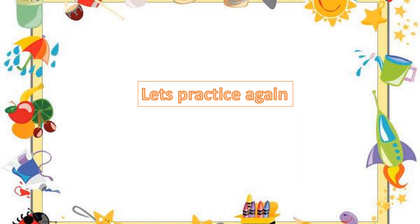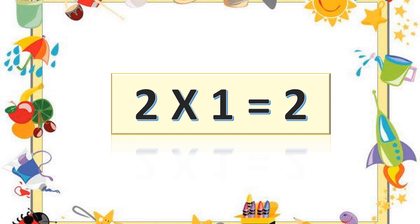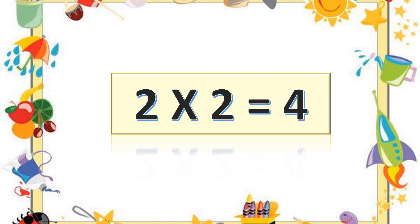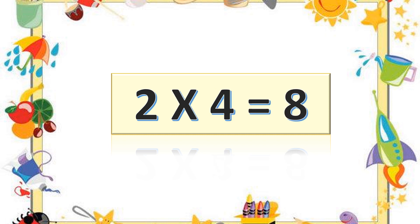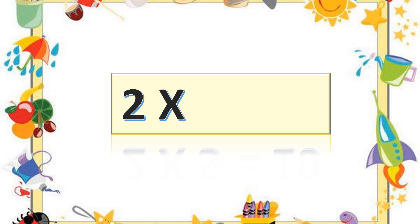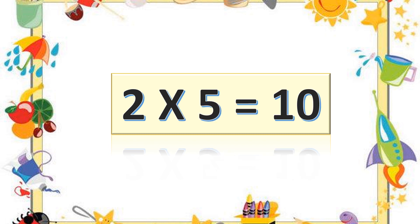Let's practice again. Two ones are two. Two ones are two. Two twos are four. Two twos are four. Two threes are six. Two threes are six. Two fours are eight. Two fours are eight. Two fives are ten. Two fives are ten.